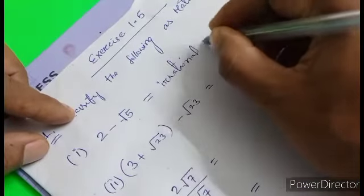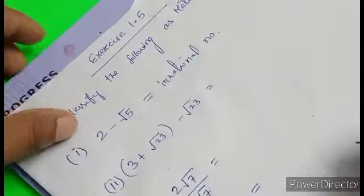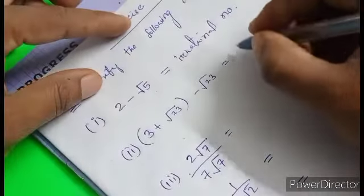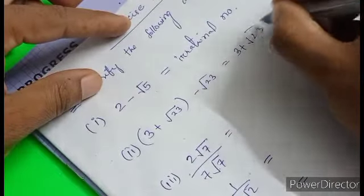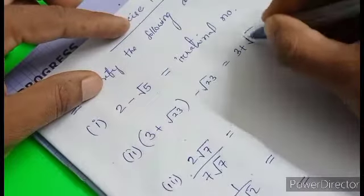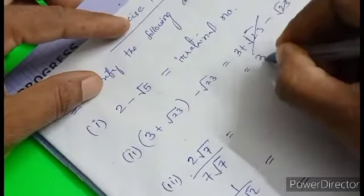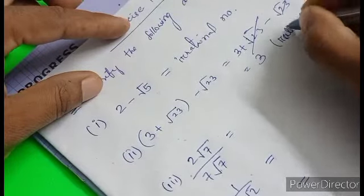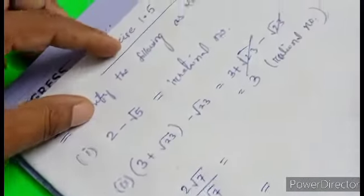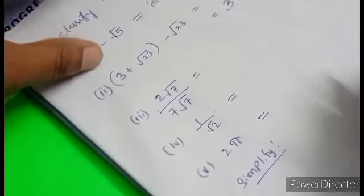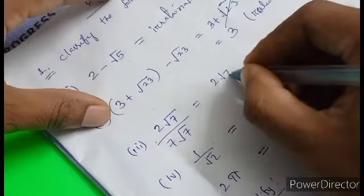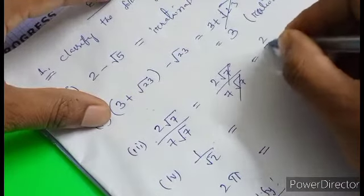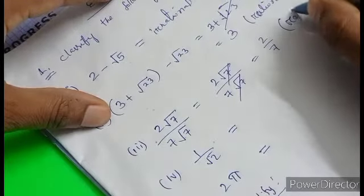Question 2: 3 plus root 23 minus root 23. The root 23 terms cancel, and 3 is remaining — this is a rational number. Next: 2 root 7 divided by 7 root 7. If we cancel, we get 2 by 7, which is a rational number.